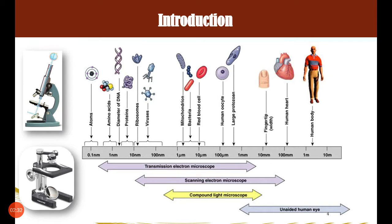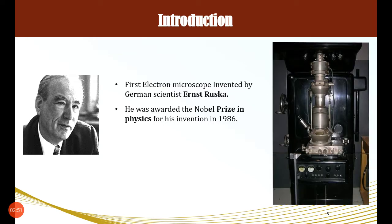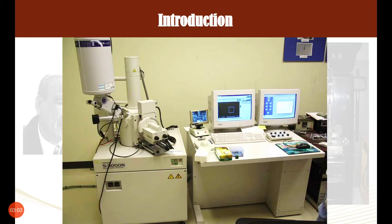For even deeper resolution we use transmission electron microscope, which is our next point. First, some history: the first electron microscope was invented by German scientist Ernst Ruska, and for his contribution he was awarded a Nobel Prize in 1986. This is the replicate photograph of the first electron microscope assembled by Ernst Ruska, and this is a photograph of a modern, well-assembled SEM microscope from Shivaji University, Kolhapur, Physics Department.